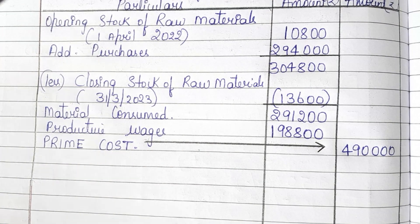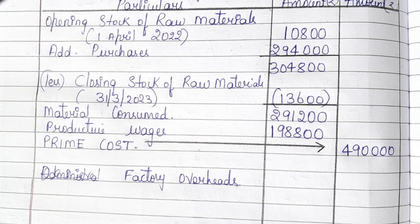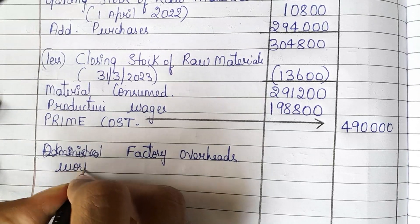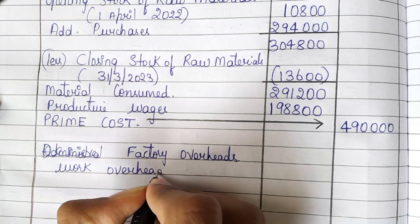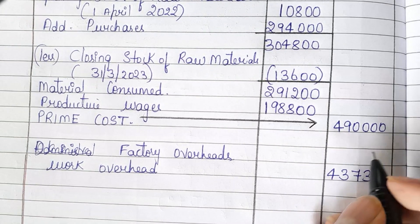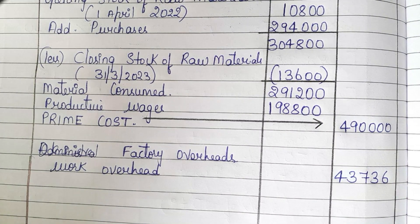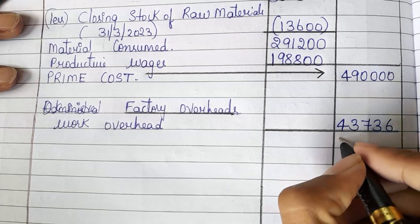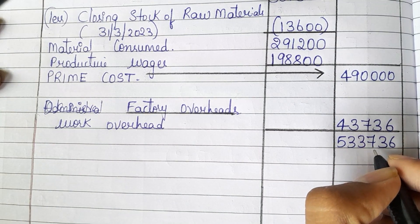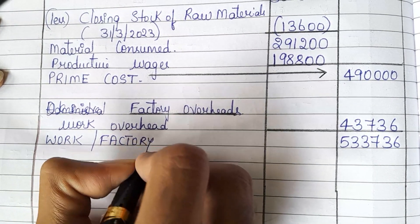For this prime cost, we need to add overheads. So 4,90,000 plus 43,736. We will be getting 5,33,736. This 5,33,736 is the work cost or factory cost.